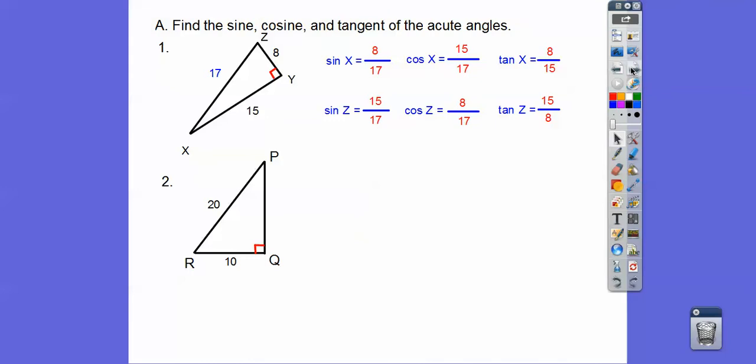So let's go ahead and do that. The sine of p is going to be opposite over hypotenuse, so 10 over 20 is 1 half. The cosine is going to be 10 root 3 over 20, and the 10 and 20 reduce to 1 half, so it's root 3 over 2. And then the tangent is going to be 10 over 10 root 3, which ends up being 1 over root 3, which simplifies to root 3 over 3.